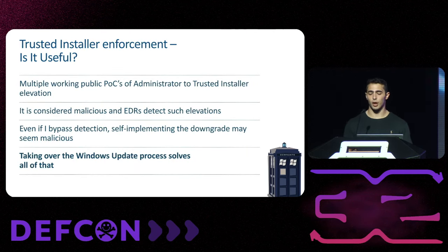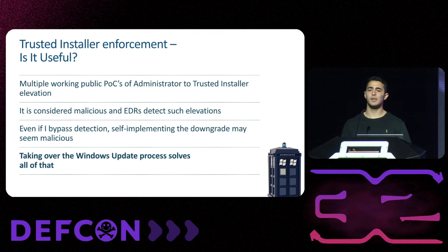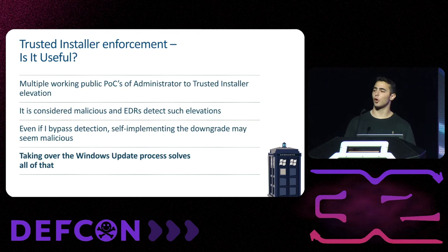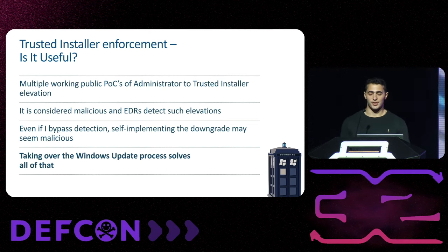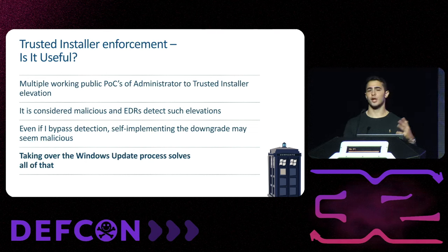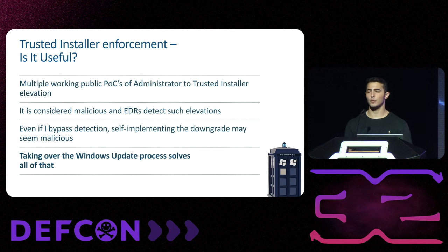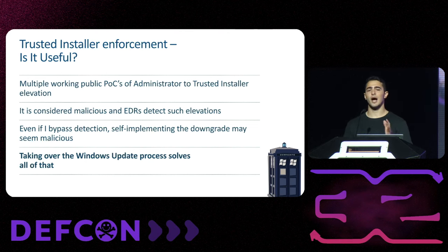Here I found the first design problem: Administrator to Trusted Installer is not considered a security boundary, and there are multiple working public proof-of-concepts of such elevation. So the Windows Update team attempted to secure the process by enforcing Trusted Installer, but since updates are only accessible to administrators, Trusted Installer is rendered completely ineffective. However, Administrator-to-Trusted-Installer elevations are considered malicious and blocked by EDRs, contradicting my first downgrade principle. The best option was to find a flaw in the update process itself.